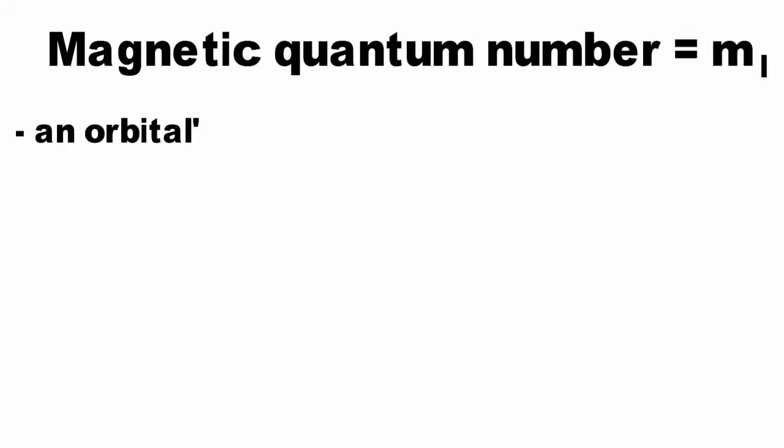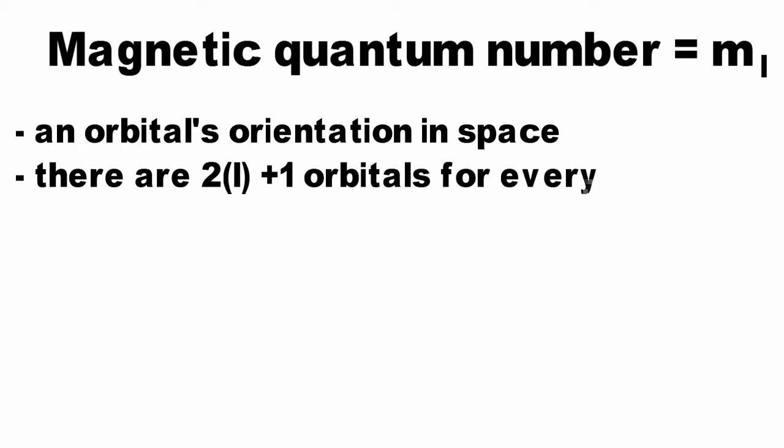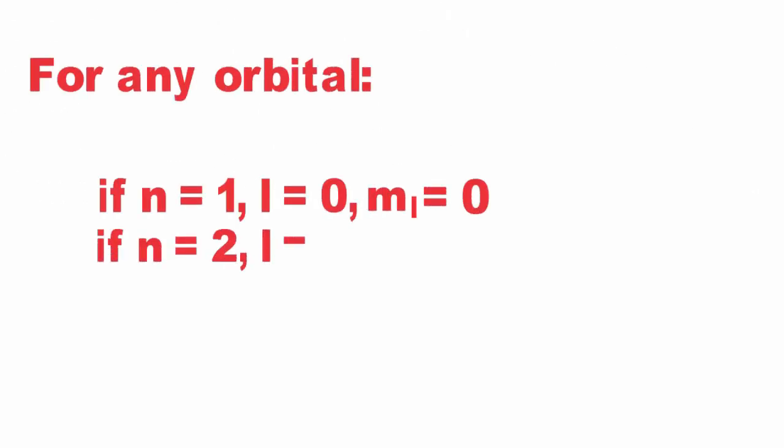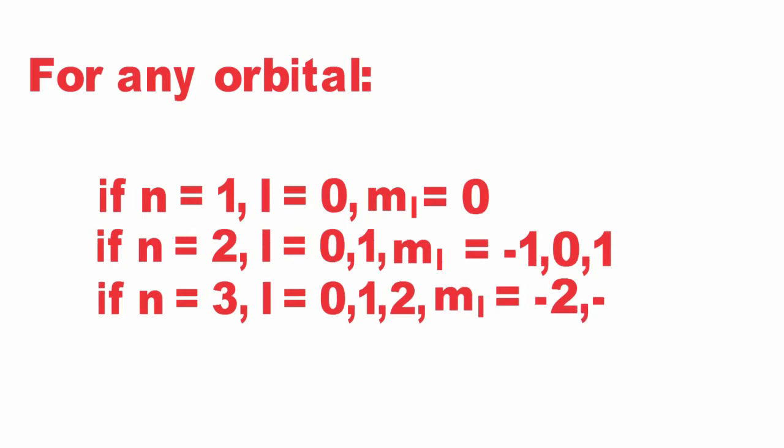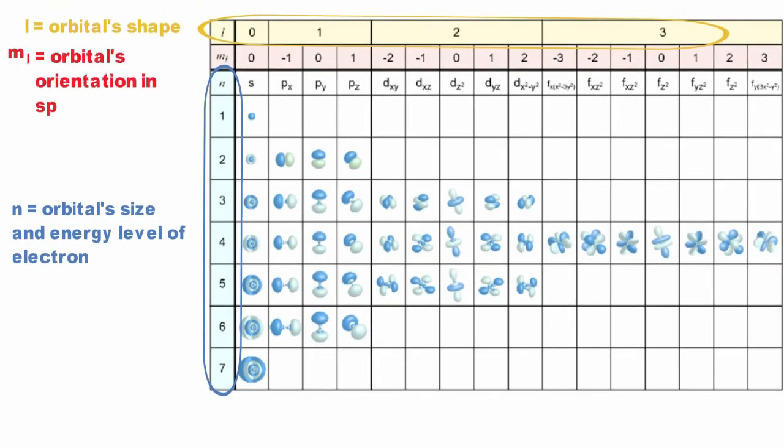The magnetic quantum number, m sub-L, indicates the orientation of the orbital in space. There are 2 times L plus 1 values for each value of L, and each value can be any integer from negative L to positive L. For example, if L is 0, m sub-L is 0. If L is 1, allowable m sub-L values are minus 1, 0, and 1.